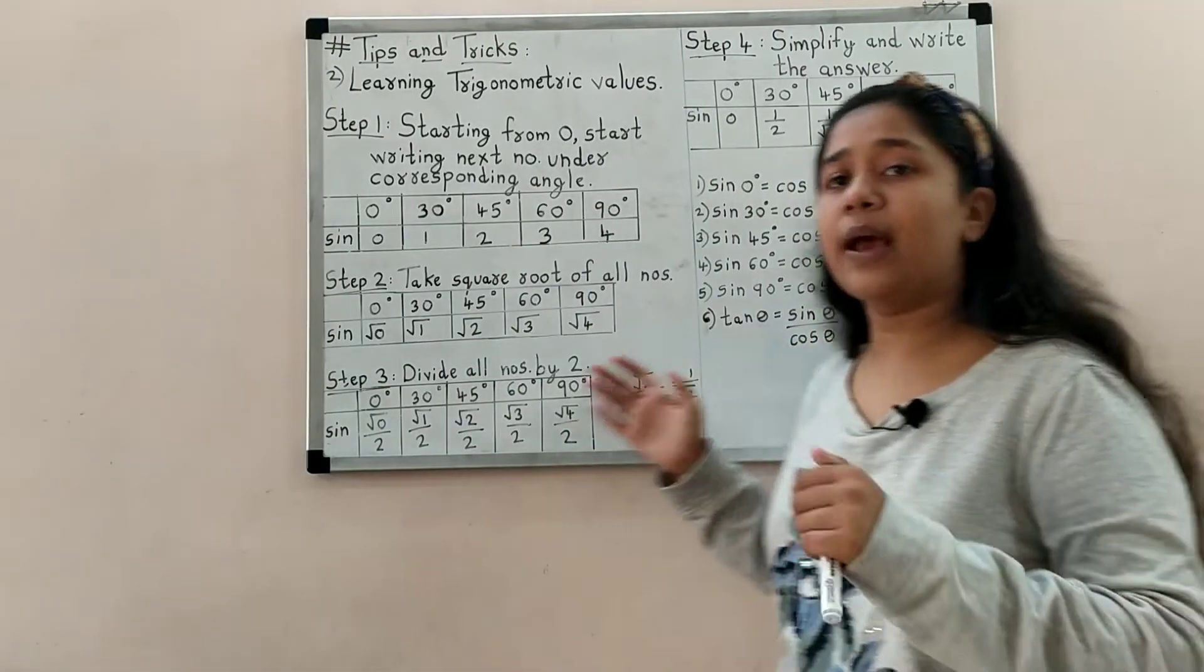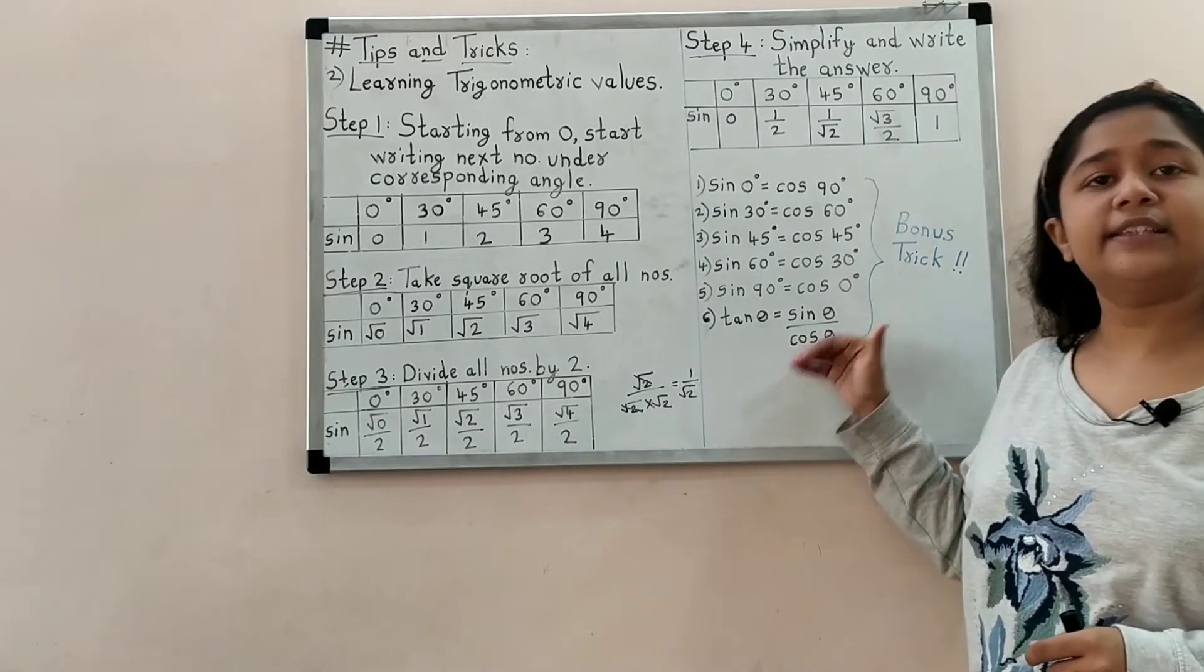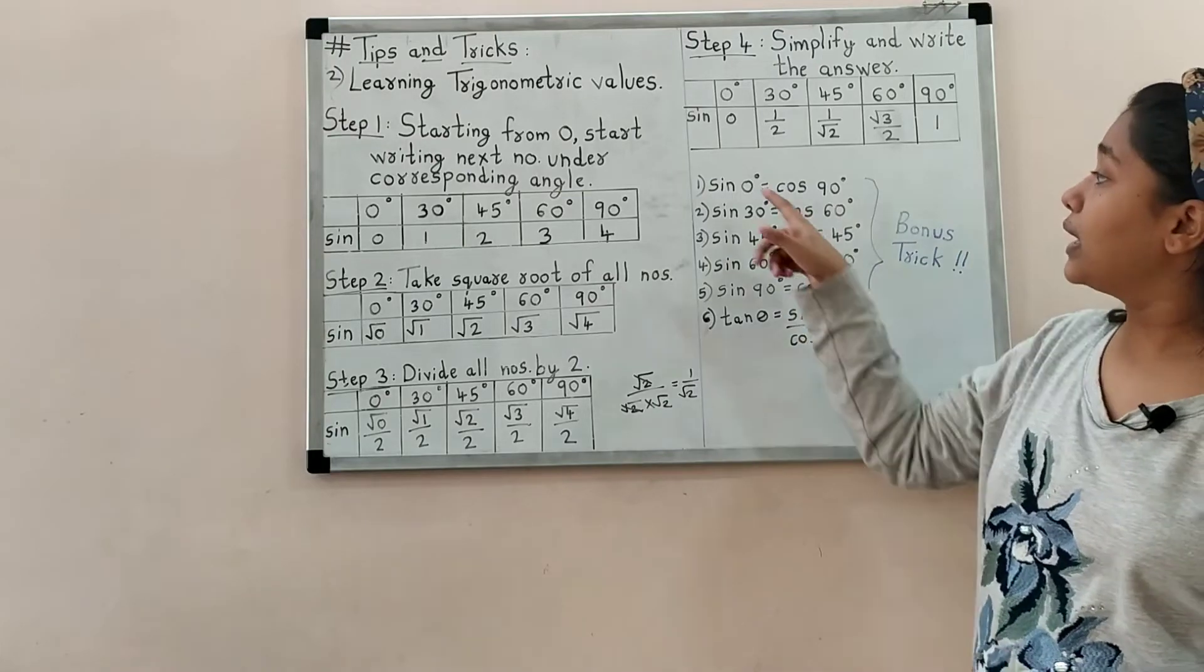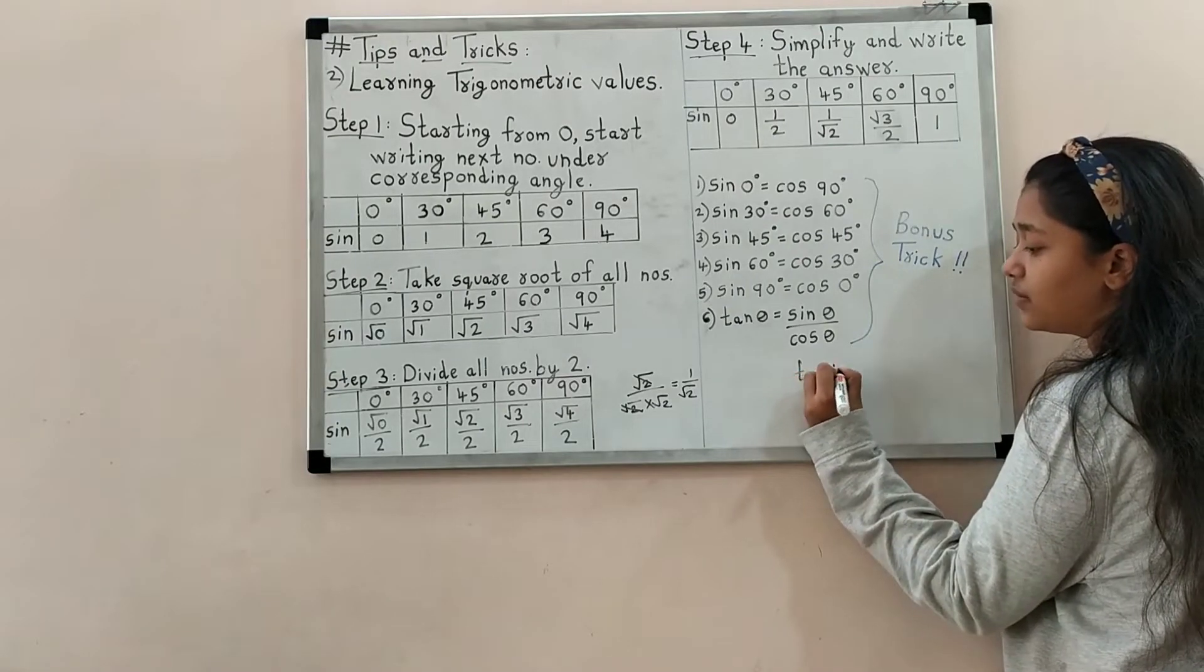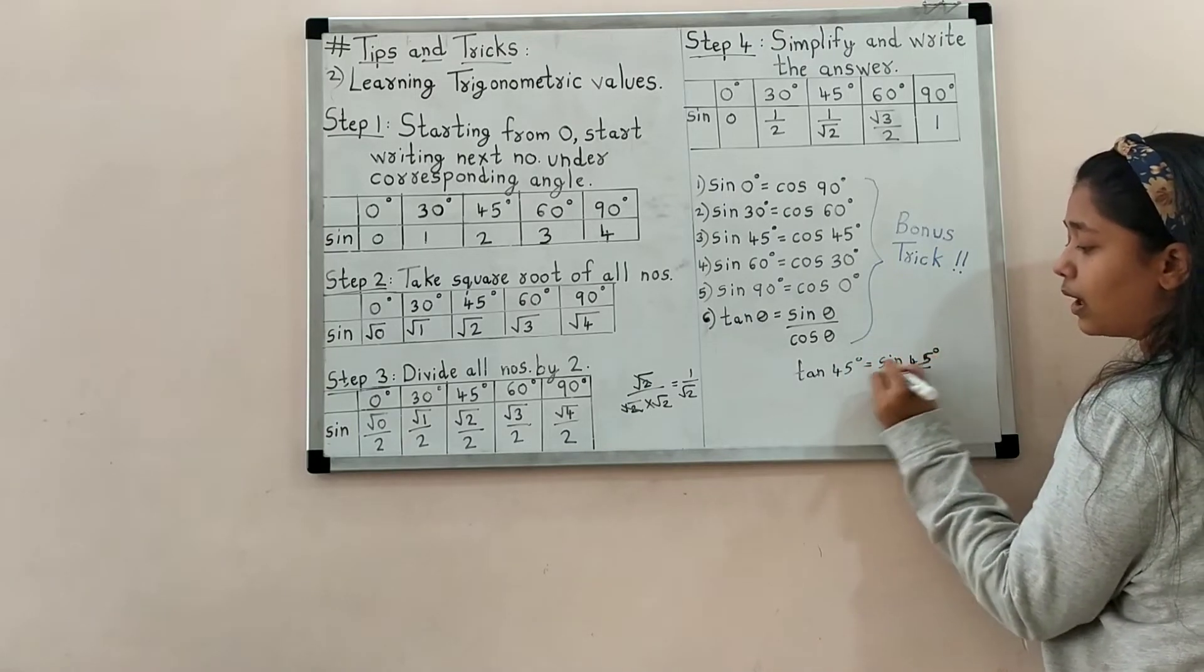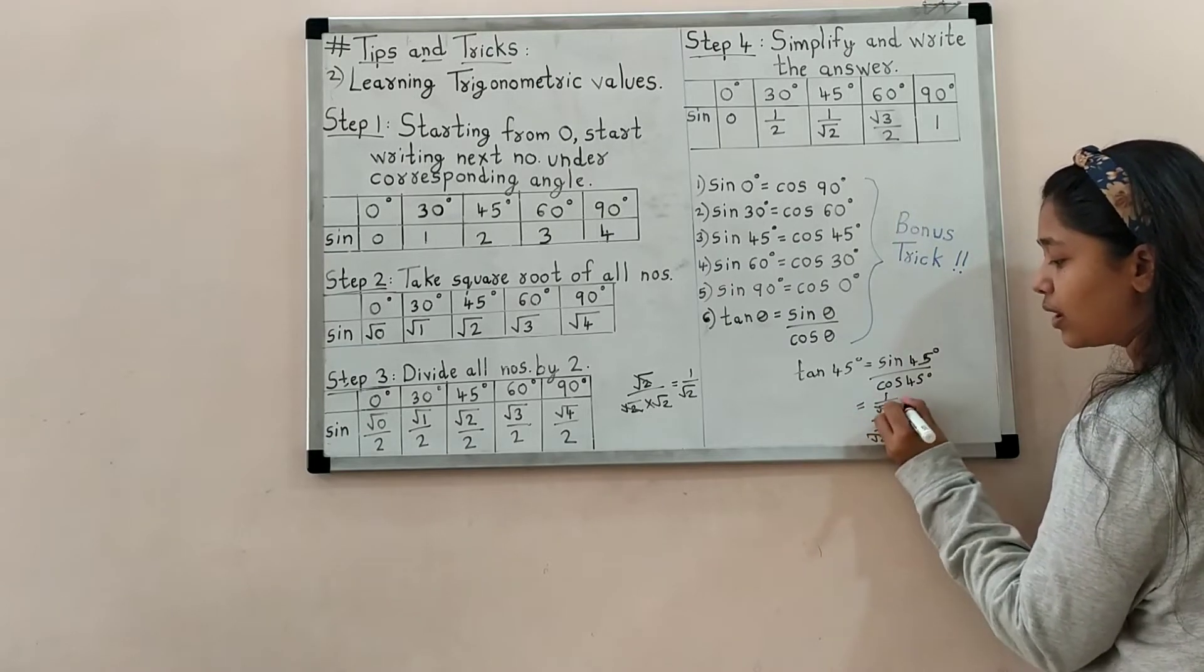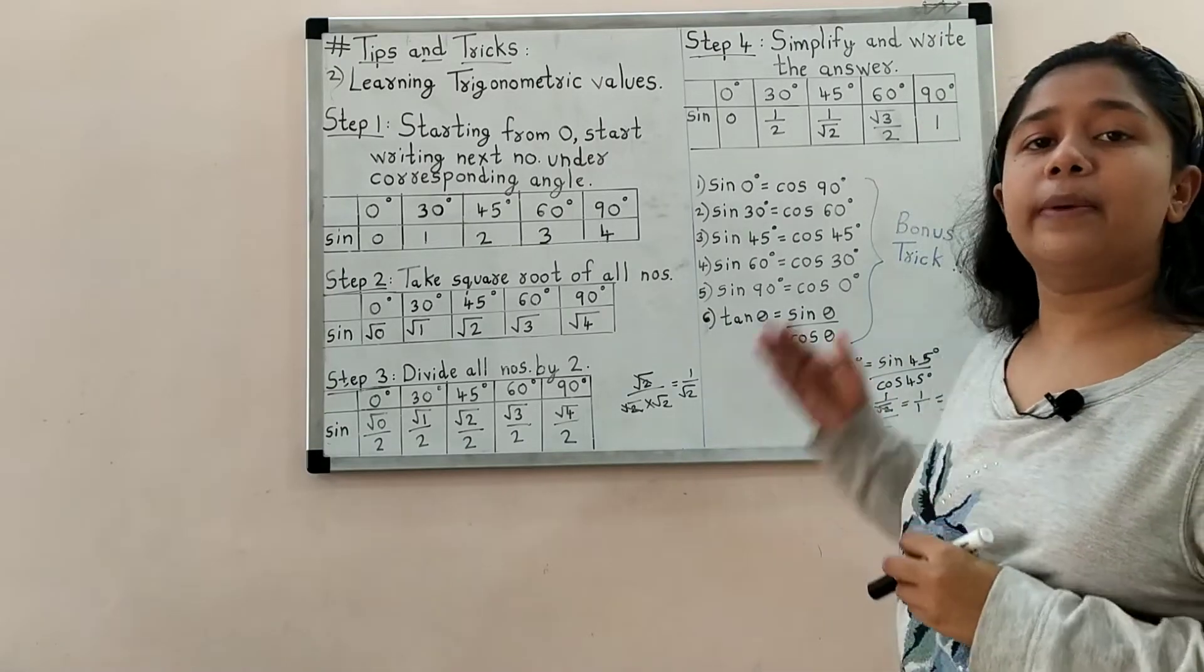Now how will you remember tan? Tan theta is sin theta upon cos theta. If any student doesn't know trigonometry, at least remember that tan theta is sin theta upon cos theta. If you have a question like what is tan 45 degree and you don't know, do sin 45 degree upon cos 45 degree. Sin 45 is 1 upon root 2, cos 45 is also 1 upon root 2. Root 2 cancels, giving 1. So tan 45 is 1.